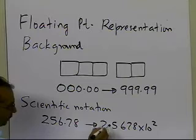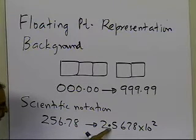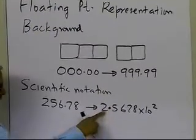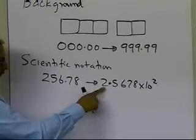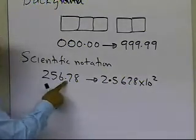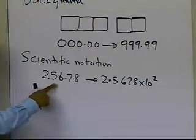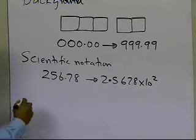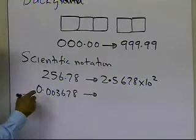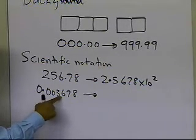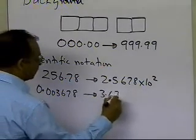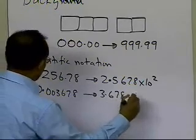The way the floating-point representation of the scientific notation is written is that you take the decimal point to a position which has a non-zero integer right before it. So in this case it's 2, giving 2.5678 times 10 to the power 2, because I moved the decimal point 2 places to the left. If I have a number like 0.003678, I move the decimal all the way up to after 3, since I need a single non-zero number before the decimal point, and this becomes 3.678 times 10 to the power minus 3.